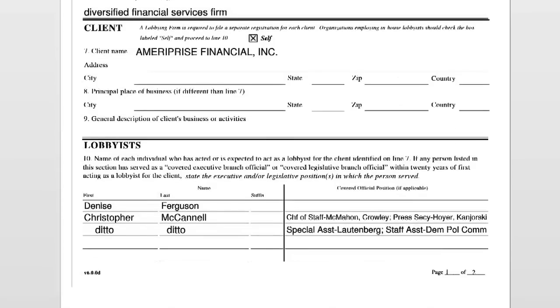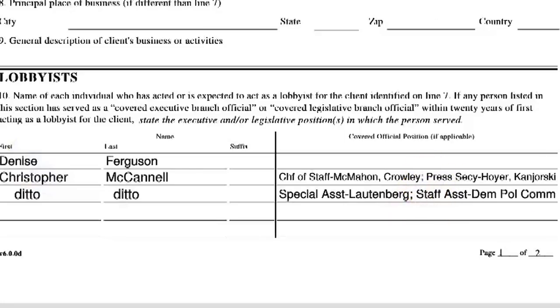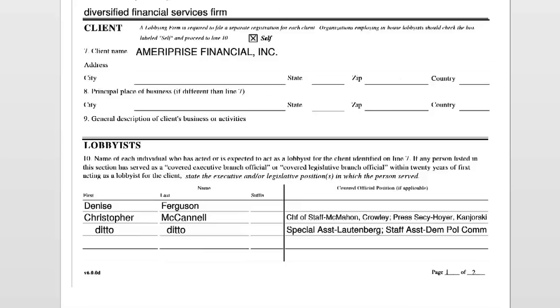You can also see, with the individual lobbyists, whether or not they used to work for the federal government. Generally, lobbyists are only required to list these positions for one year after they've left government service. So not every lobbyist who doesn't list a position — that doesn't necessarily mean they didn't work for the government before. You always have to be careful when checking that.